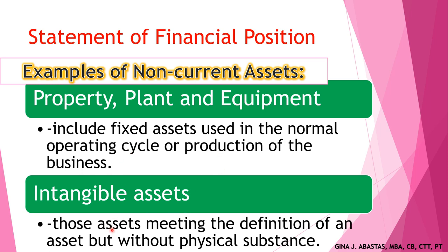Intangible assets are assets meeting the definition of an asset but without physical substance. Common intangible assets include trademarks for brand names, patents for inventions, and copyrights for artistic or literary works. Intangible assets with definite useful lives are amortized over their useful lives. Those with indefinite useful lives are annually tested for impairment. So for PPE you have depreciation, and for intangible assets you have amortization.